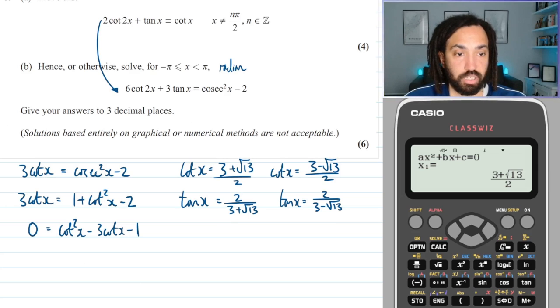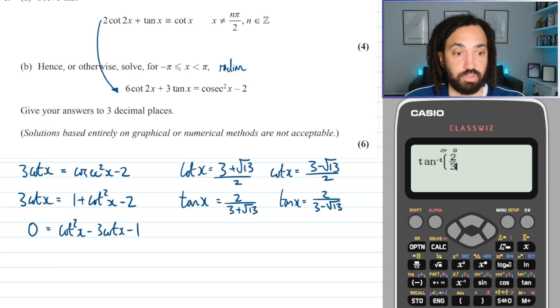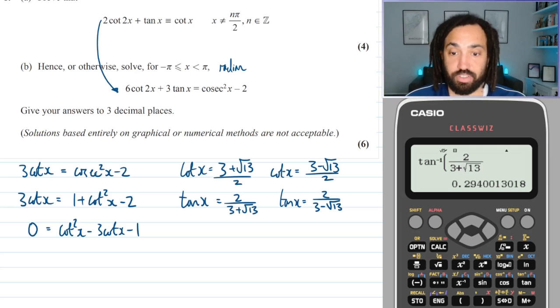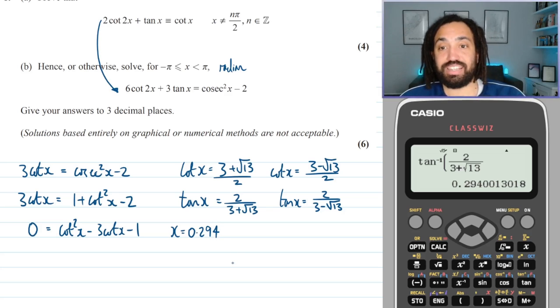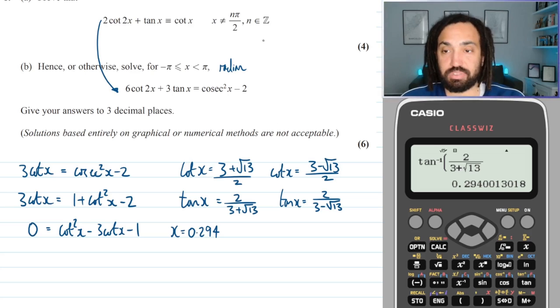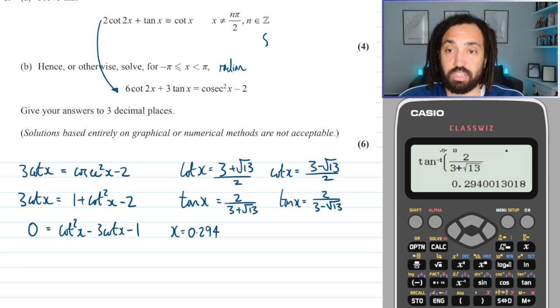Okay so I'm going to go to tan to the minus 1 of 2 over 3 plus root 13. Now that gives my first value so I can write here x is equal to 0.294 three decimal places. Now I solve all my trig equations in the same way. Some people use CAST diagrams, some people do different things, but this is how I do it every time. So the one thing I do remember is that for sine the second solution is pi minus the first solution. For cos it is 2 pi minus the first solution, and for tan it is pi plus the first solution.